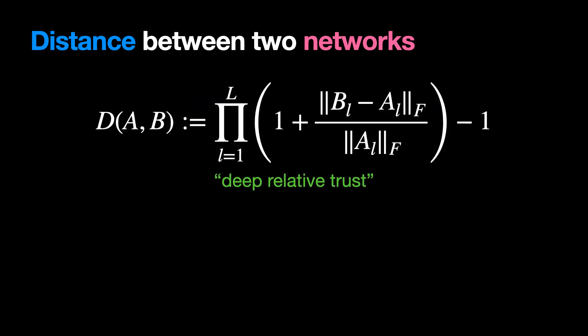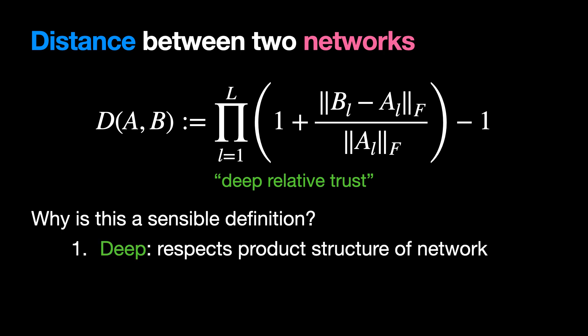We need to ask, why is this a sensible definition? Well, it's deep, meaning it respects the product structure of the network. It's relative, meaning it respects the scaling symmetry across layers. And it's a trust region for multilayer perceptrons.